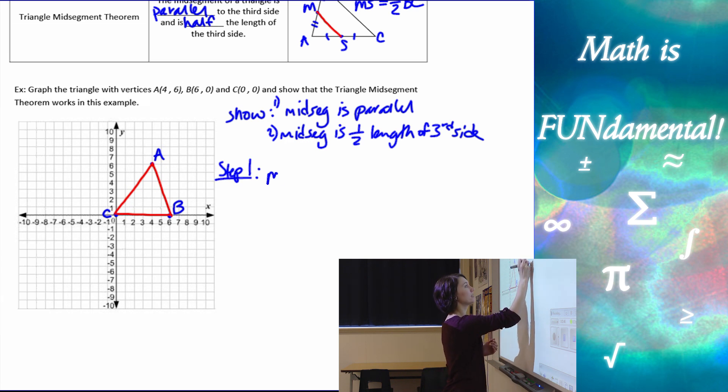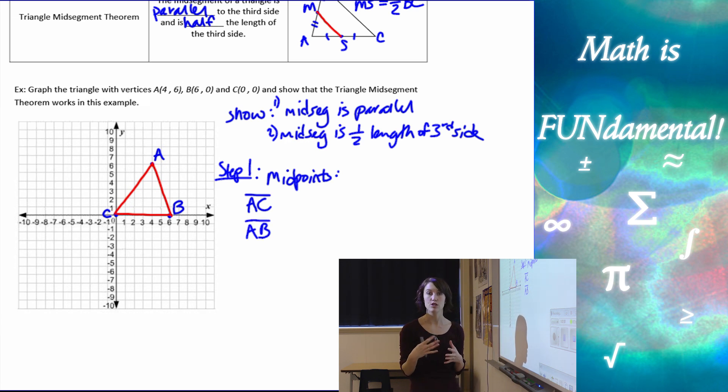Step one, I need to find the mid-points of two of my sides, and I've chosen to find the mid-points of AC and the mid-points of AB. That way, I can have a mid-segment that's parallel to my horizontal side, CB.